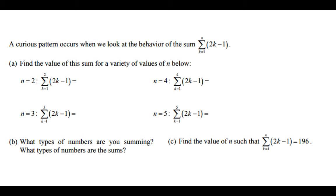The sum is 2k minus 1 from k equals 1 all the way to n. Find the value of this sum for various values of n below. What types of numbers are you summing? What types of numbers are the sums? Find the value of n such that the sum equals 196. I did solve this, it's only three questions. If you have any type of question please send them to me. My email is kb2232 at nyu.edu.